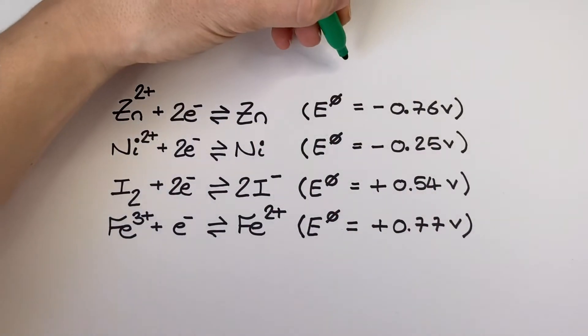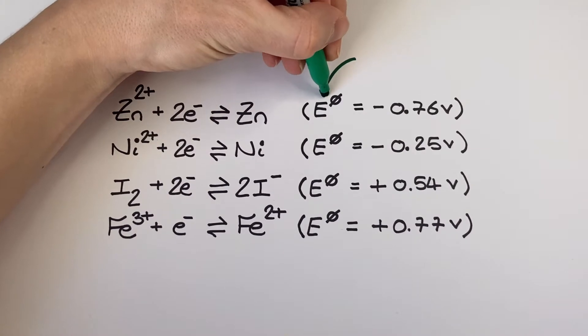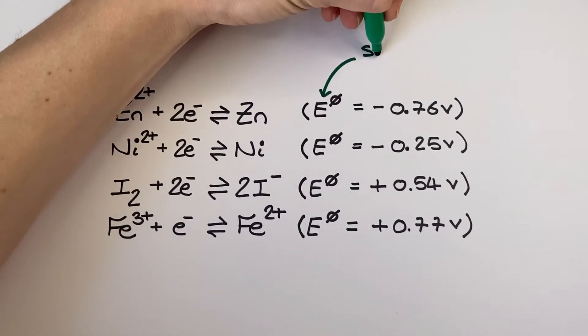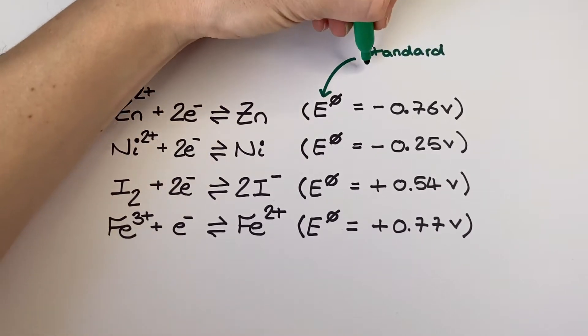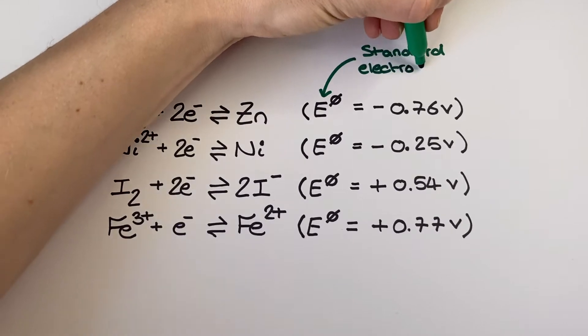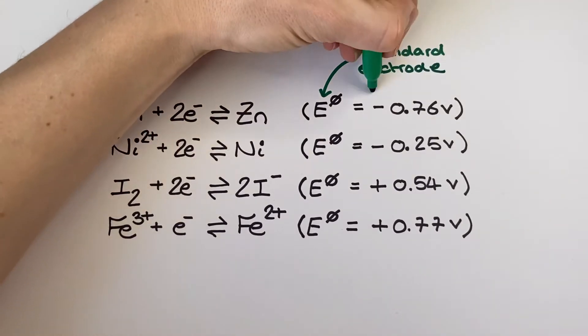So what we have here is a little snapshot of an electrochemical series. I've got a list of half equations all written in the reduction direction which means the electrons are reactants and each half equation has equilibrium arrows which I'll come back to later.